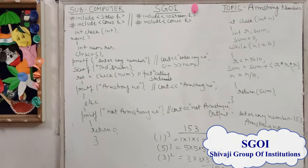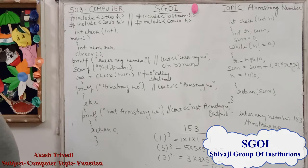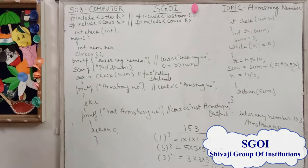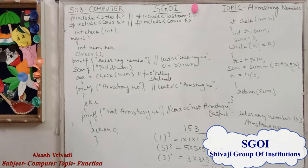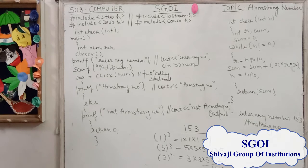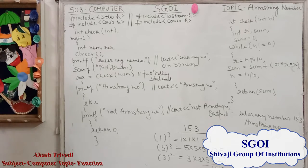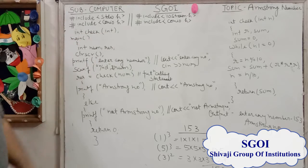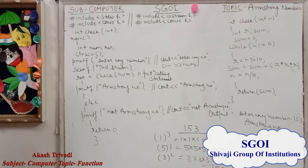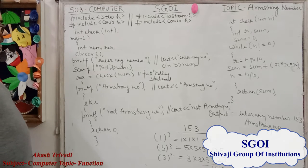Because we are doing this topic under functions in C, firstly we create a function header and declare a function with its data type, function name, and number of arguments or parameter list. The return type is int, the function name is check, and the parameter is one integer. After that, we declare the main function and open the body of the main function where we write our statements.